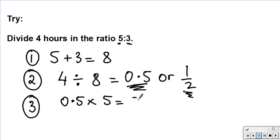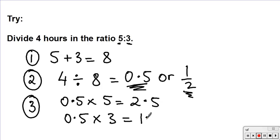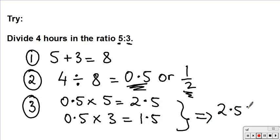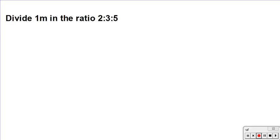So I'm going to do 0.5 times 5, which gives me 2.5, and 0.5 times 3, which gives me 1.5. So my final answer is 2.5 to 1.5. If you got the right answer, give yourself a tick, and let's move on to another example.